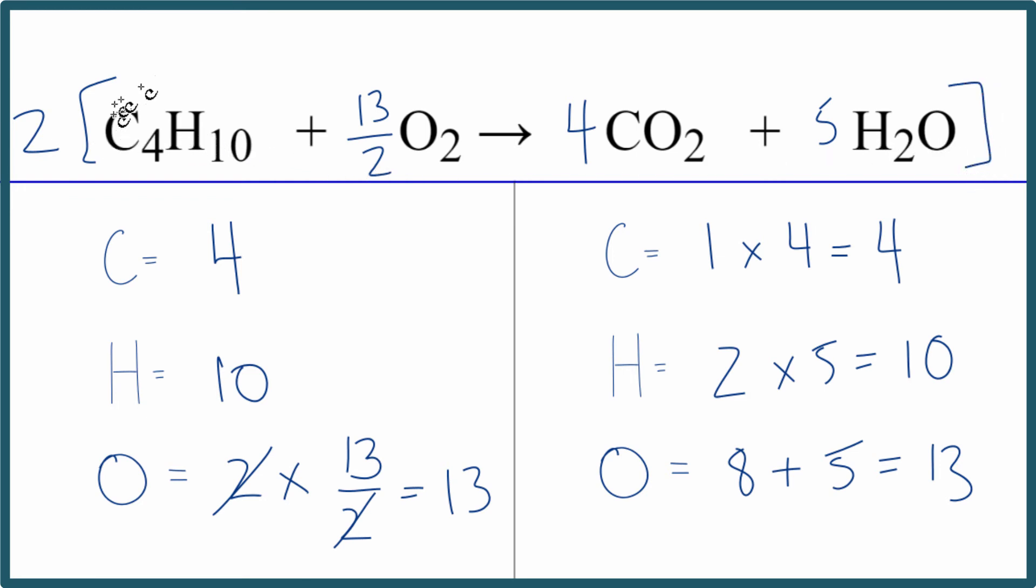We have two times the one here, so we'd have a coefficient of two. Two times 13 over two, that just equals 13. Four times two is eight. Five times two is 10. So these are the new coefficients up here. Let me clean that up and put them in, and we'll be done with this equation.